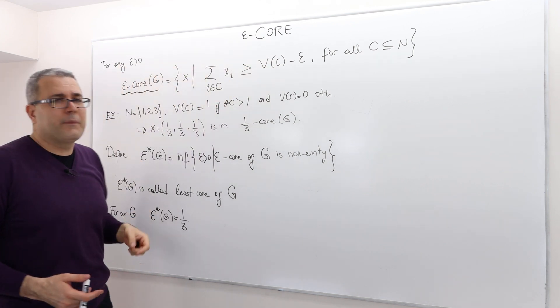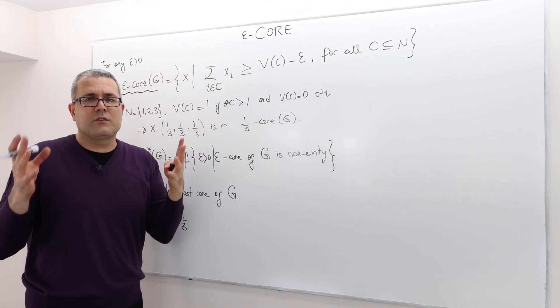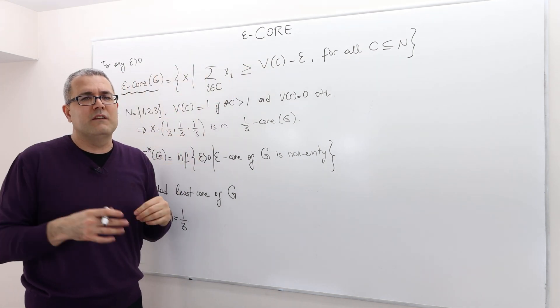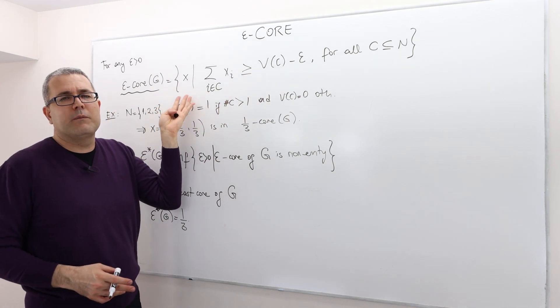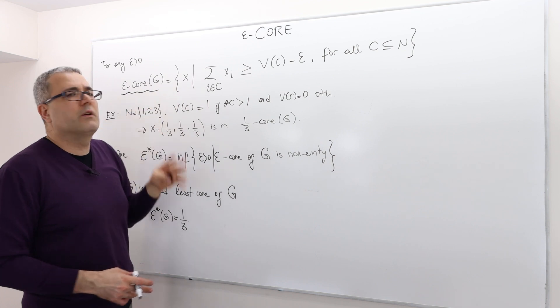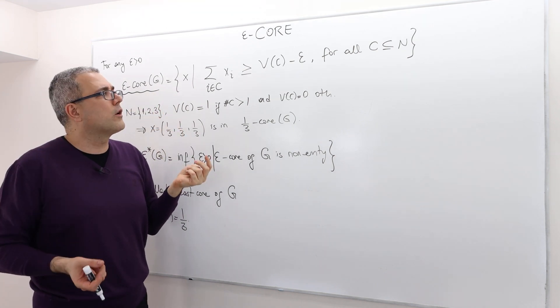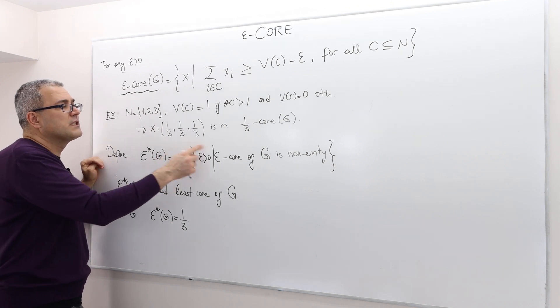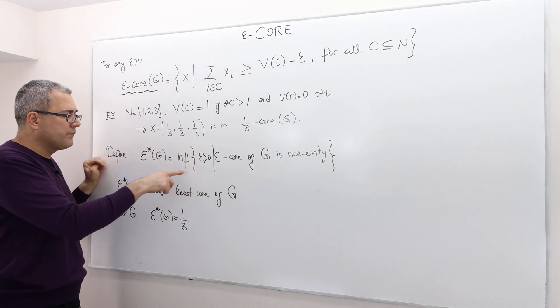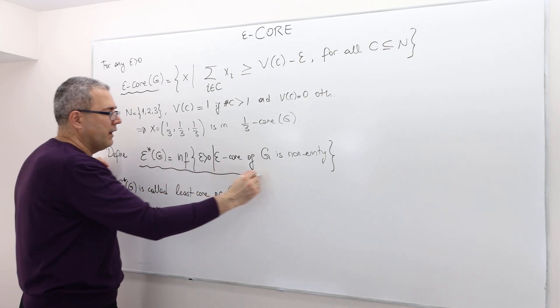For example, you can choose Epsilon almost very large, like almost infinite. In this case, probably every payoff vector is going to be in the Epsilon core. So for that reason, what matters is the smallest possible Epsilon. So this is exactly what we define.